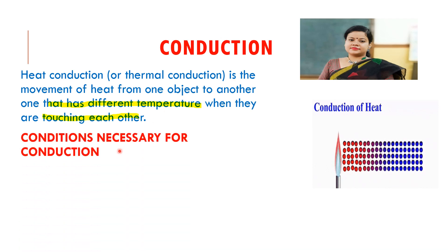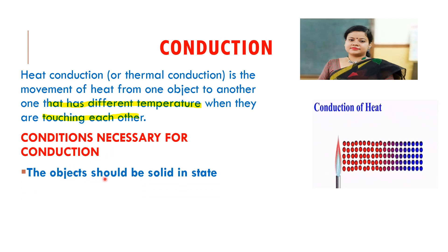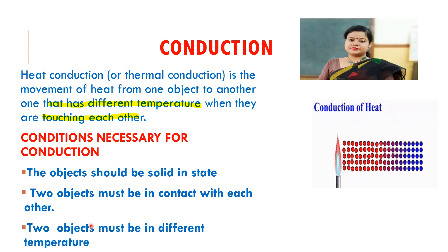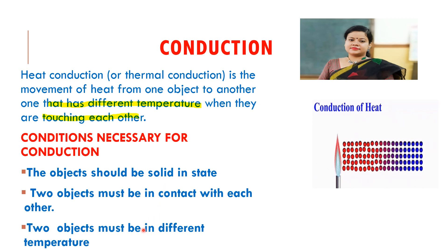Conditions necessary for conduction: the object should be in solid state — conduction occurs only in solids. Two objects must be in contact with each other. Two objects must be at different temperatures. These are the three most important conditions necessary for conduction to take place.